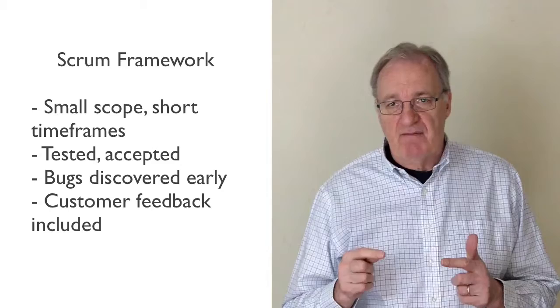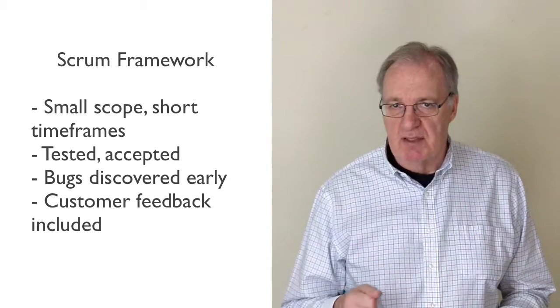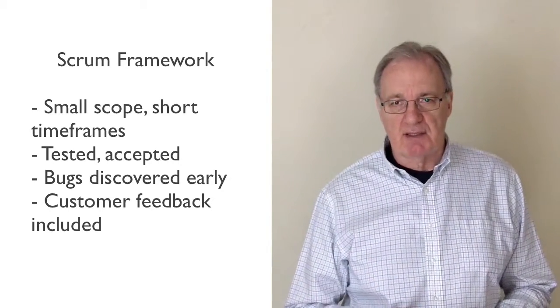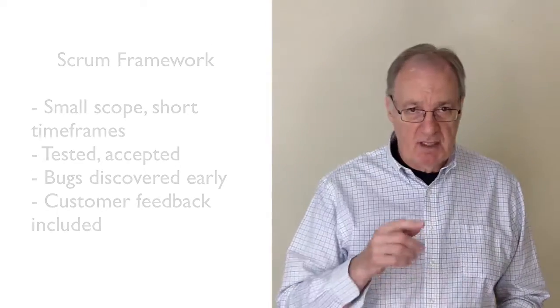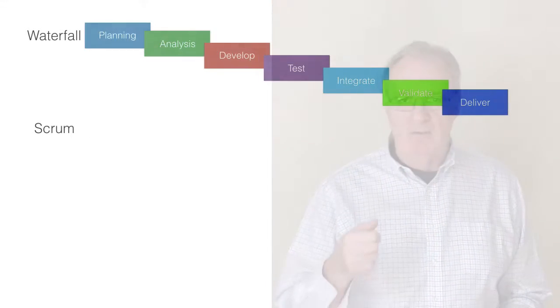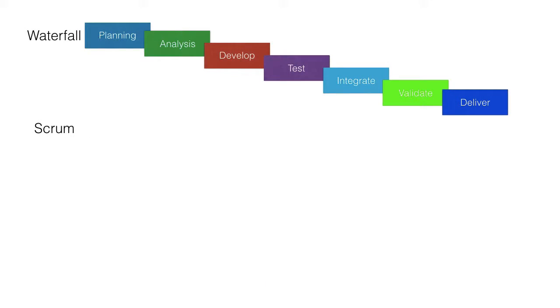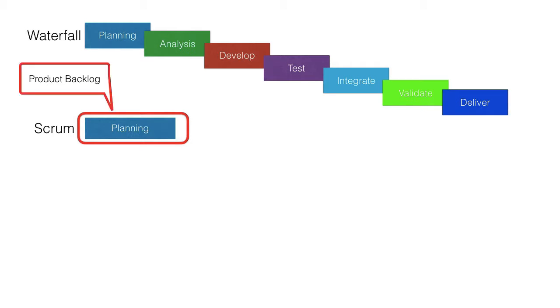And this same framework can also be used to develop many other products, not just software applications. In the Scrum way of doing things, the initial planning is done: developing the product backlog, release planning, and the first sprint backlog. Remember, the sprint backlog is a list of features and functions that can be developed within the fixed time box of the sprint.